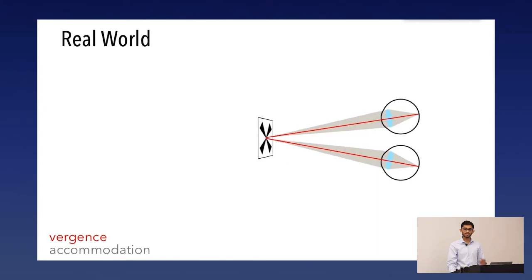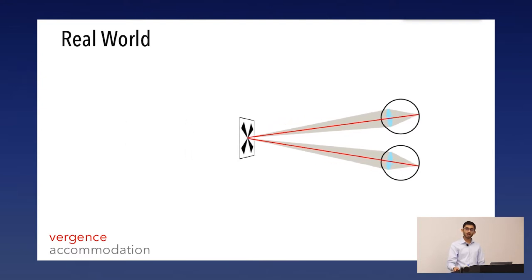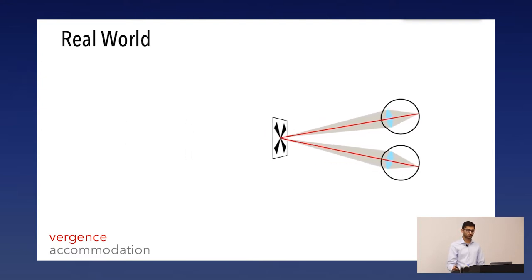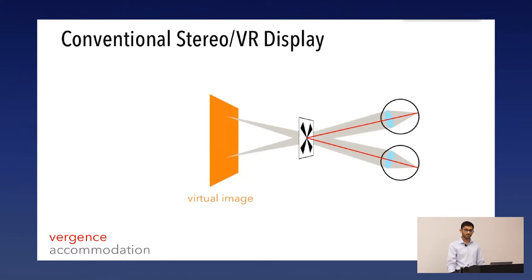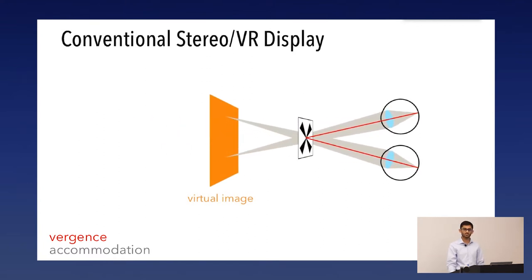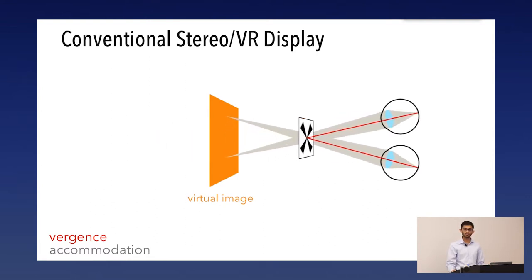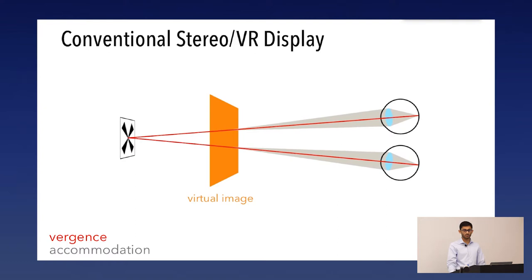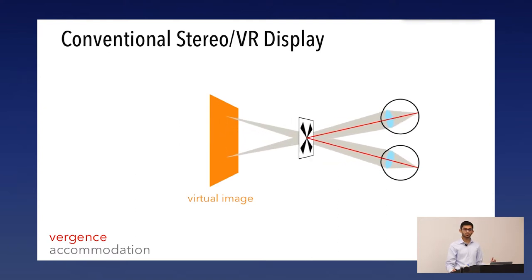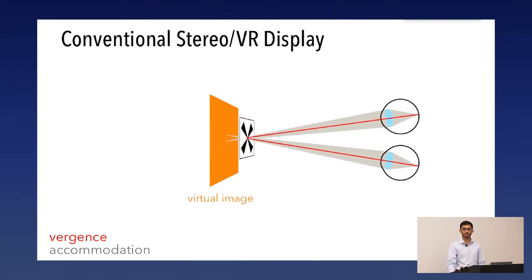In the real world, you always verge and accommodate to the same distance as an object. In a VR display, you're forced to accommodate to the distance of the virtual image, but you're free to verge in front of or behind it based on the binocular disparity being shown. This creates vergence-accommodation conflict (VAC), causing headaches, eye strain, and general discomfort in VR headsets.